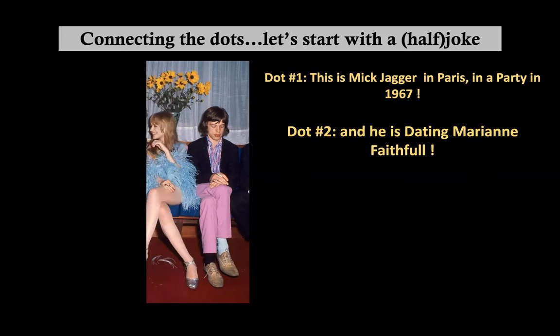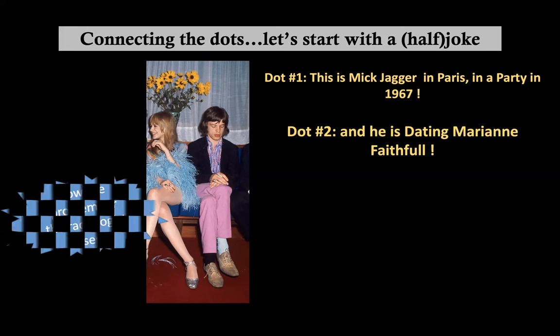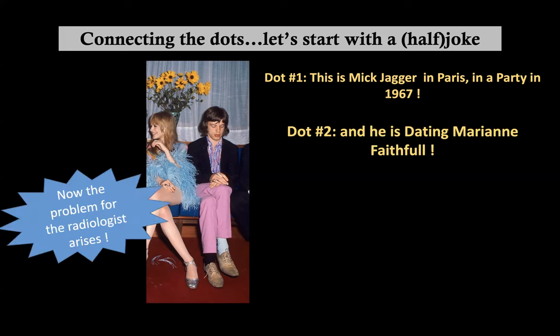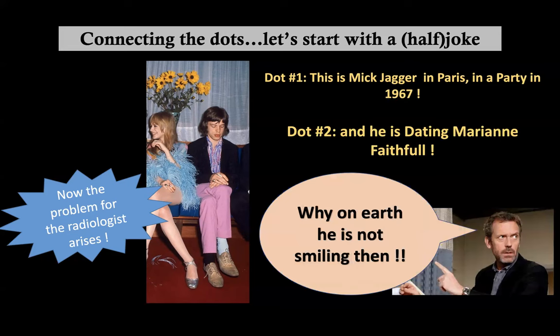Let's add some pieces to that: he was dating Marianne Faithfull — a smart, beautiful artist — again in Paris at a party in 1967. We have a lot of information. But the problem for the radiologist arises when two pieces of the bigger picture don't add up: if this is Mick Jagger, very famous, in Paris at a party in the 60s, dating Marianne Faithfull — why on earth is he not smiling? There is something off that is not present in this picture.